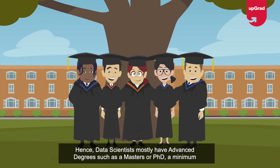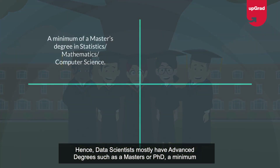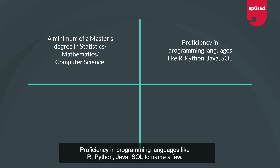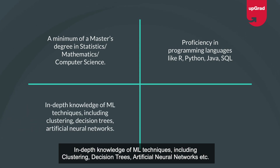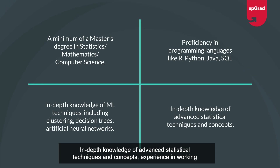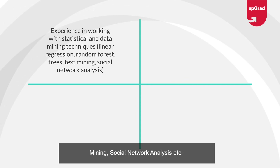Regarding skills: the role of a data scientist is highly specialized and versatile, so data scientists mostly have advanced degrees — a master's or PhD. Required skills include a minimum master's degree in statistics, mathematics, or computer science; proficiency in programming languages like R, Python, Java, and SQL; in-depth knowledge of ML techniques including clustering, decision trees, and artificial neural networks; and advanced statistical techniques and concepts.